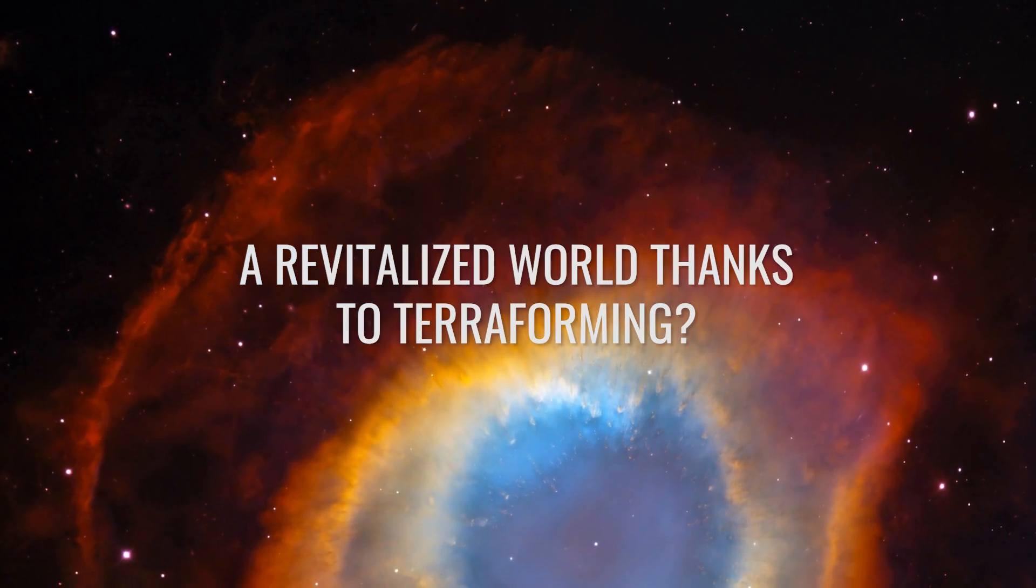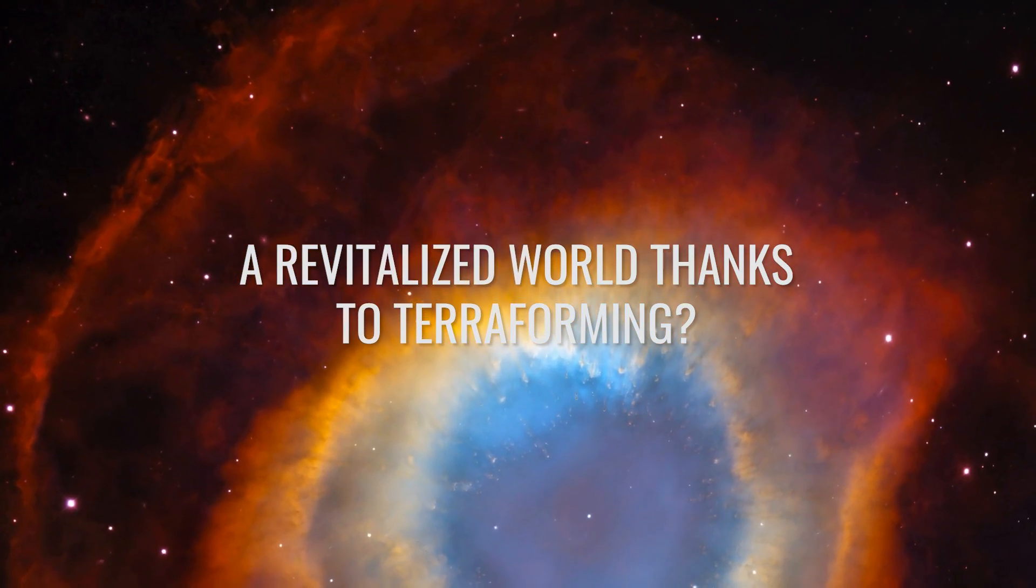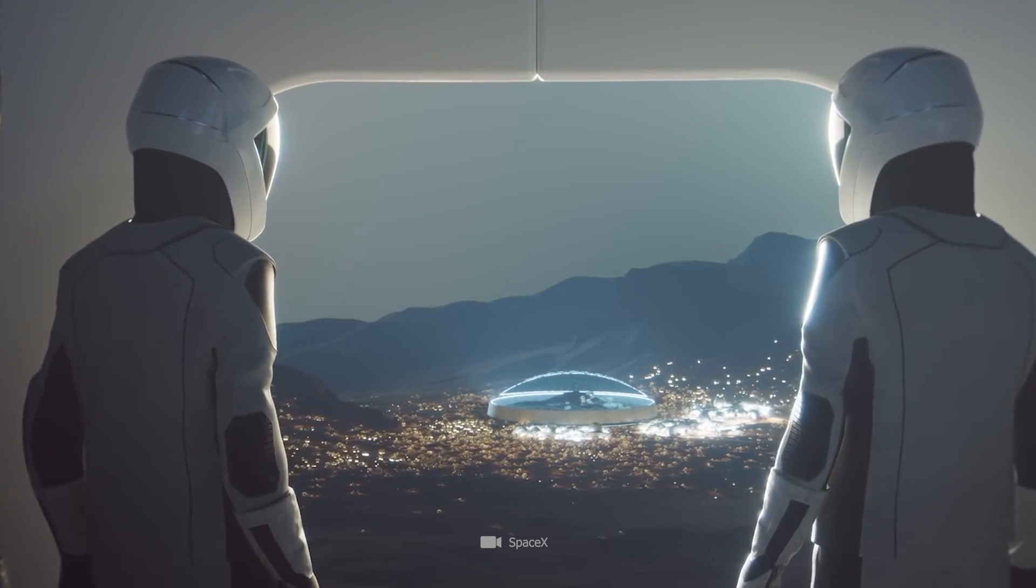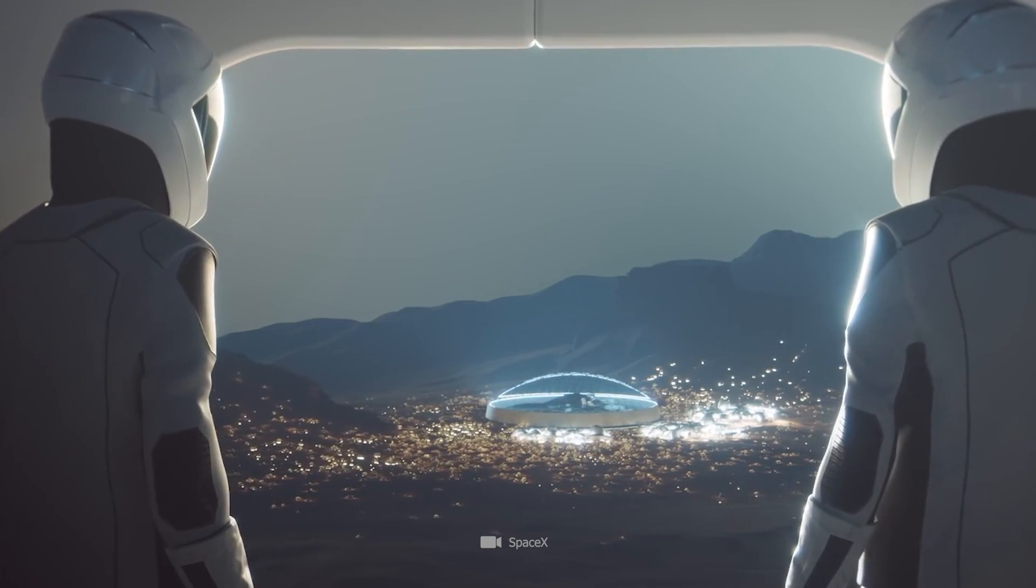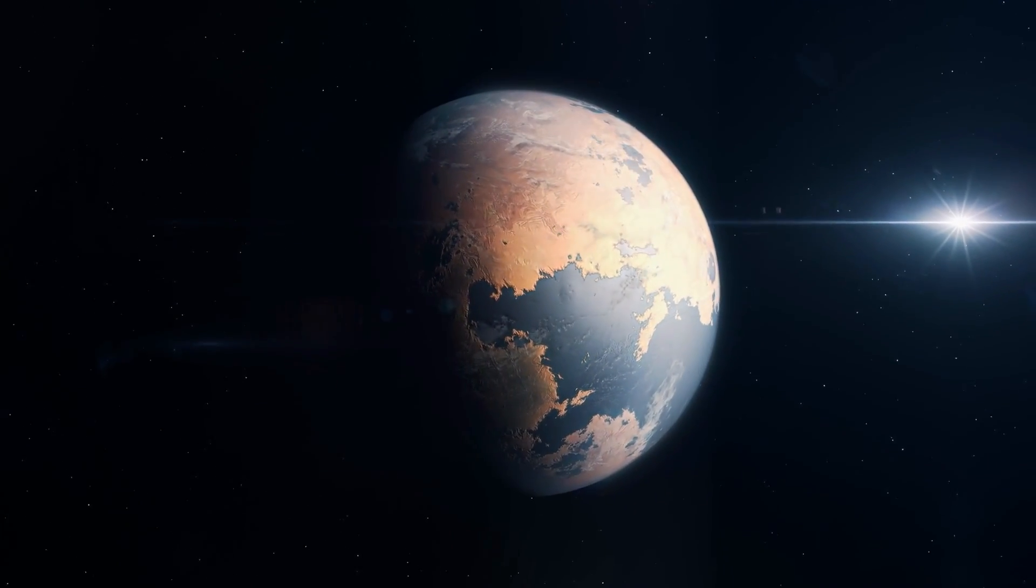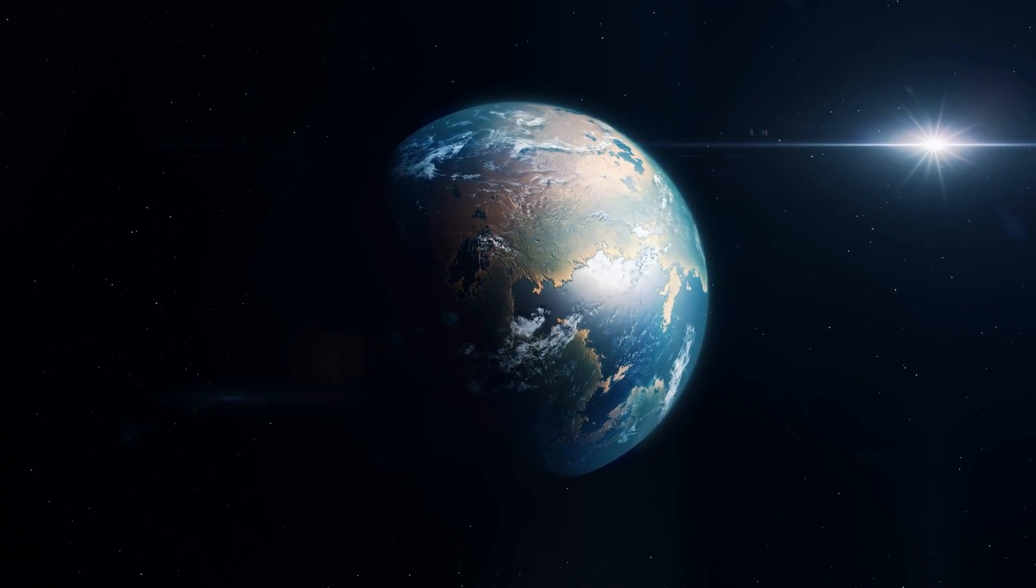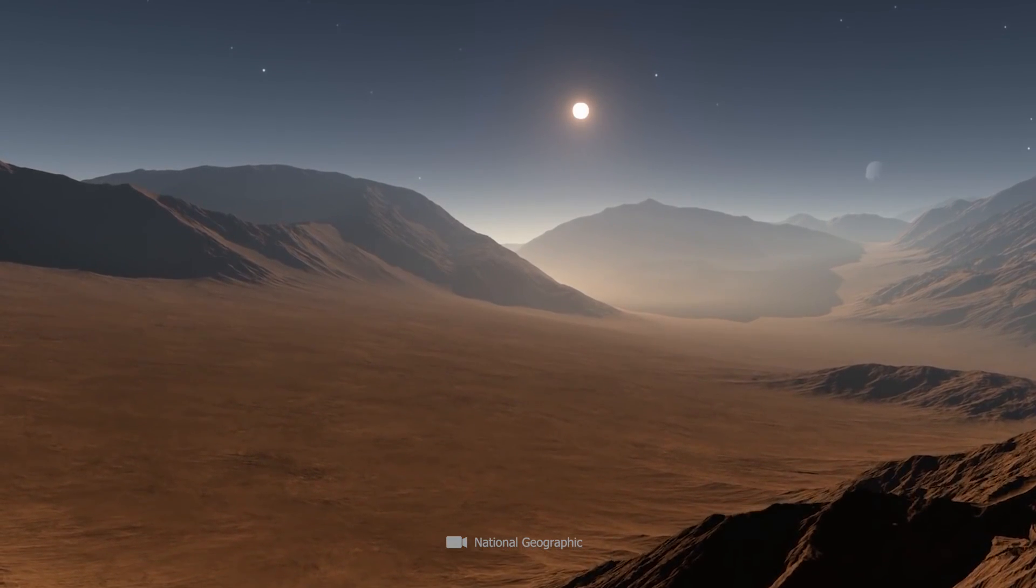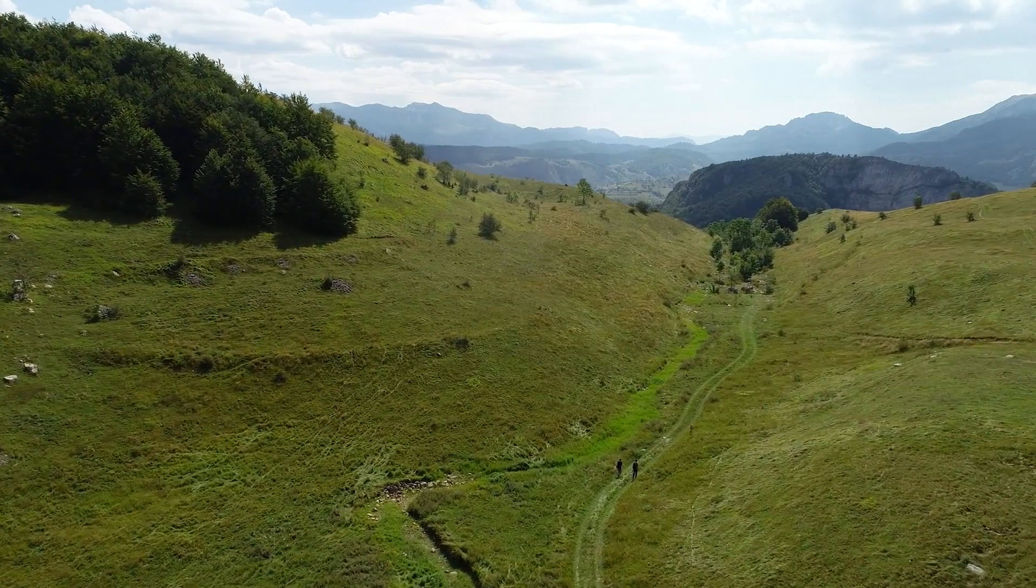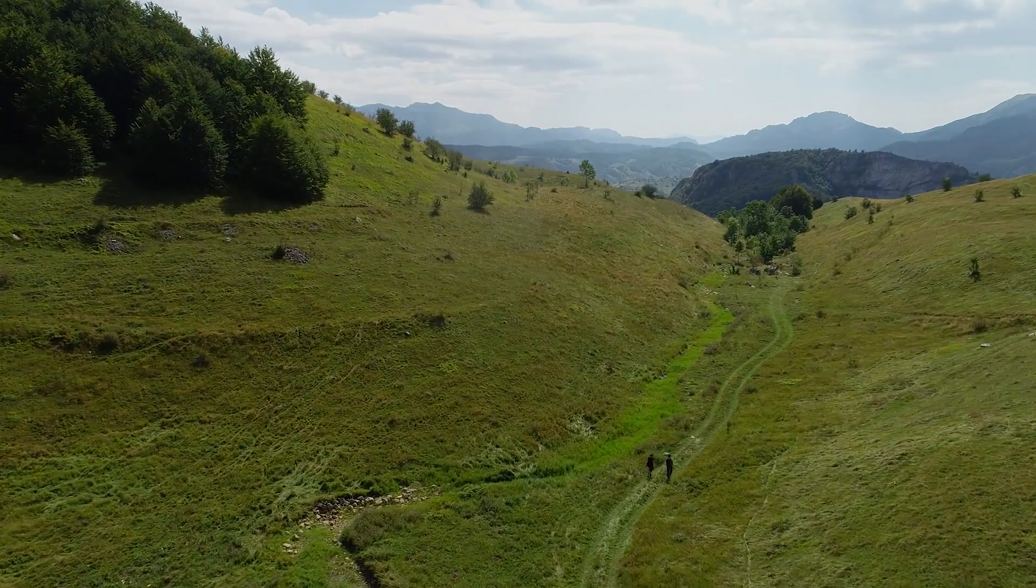A revitalized world thanks to terraforming? Elon Musk, the visionary CEO of SpaceX, has the ambitious goal of making Mars a second Earth for humanity. Among the most fantastic plans of key technologies to make this goal possible is terraforming. Terraforming stands for a process by which the environmental conditions of a planet are altered to make them more Earth-like and thus habitable to humans.